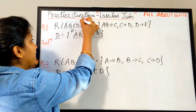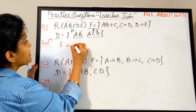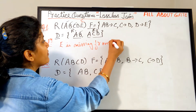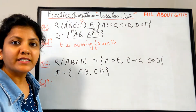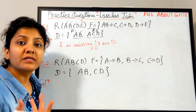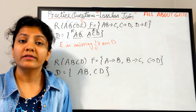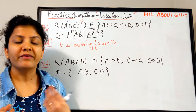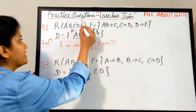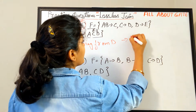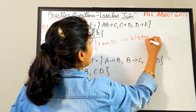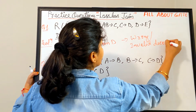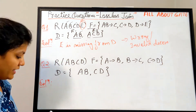E is missing from D, so forget about lossless join — it is not a proper decomposition. It is not even preserving the attributes. Once it is not preserving all the attributes, it certainly cannot be a lossless join, and it cannot preserve all the dependencies either. This is a wrong or invalid decomposition, so we need not check anything else.